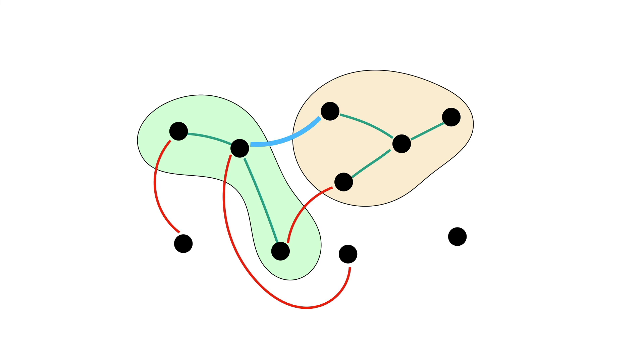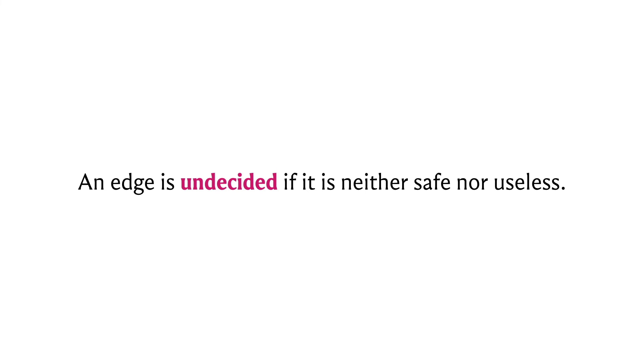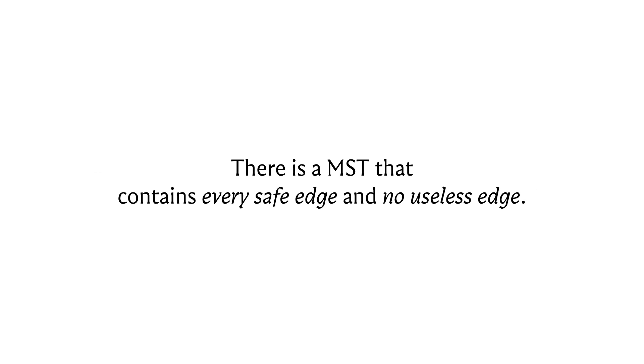But before we get to that, let's also label all the remaining edges as undecided. So you could have edges that are neither useless nor safe. So these are edges about which we don't know much and we'll just call them undecided.